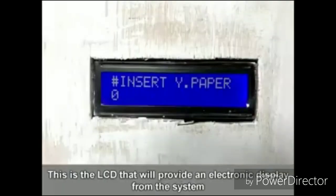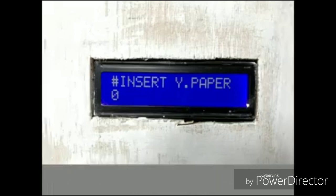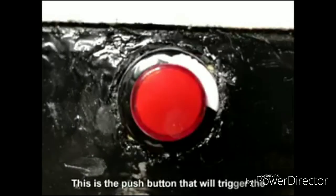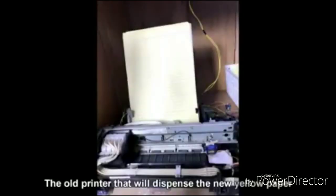This is the LCD that will provide an electronic display from the system. This is the push button that will trigger the servo motor to dispense the new yellow paper. The old printer that will dispense the new yellow paper.